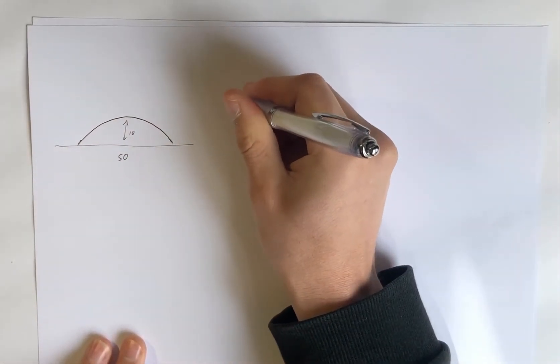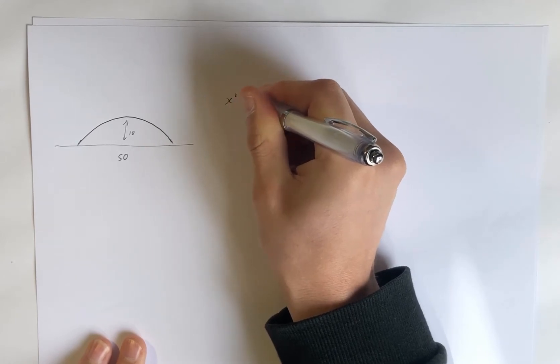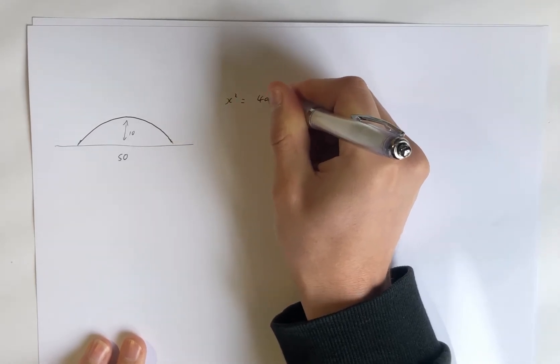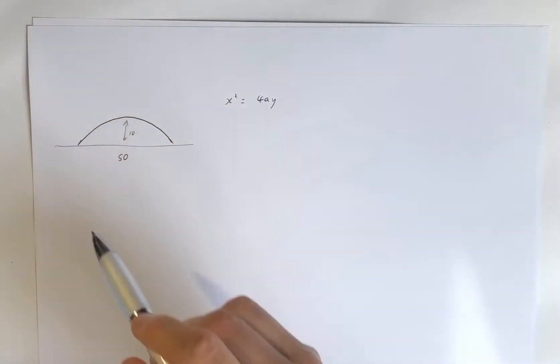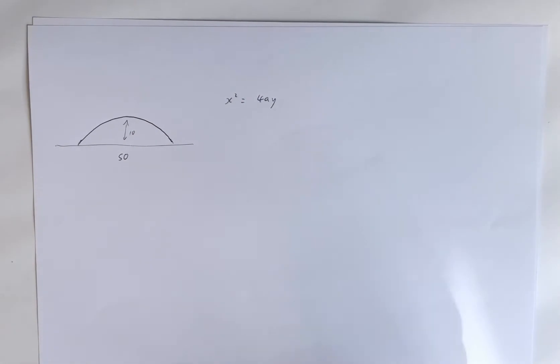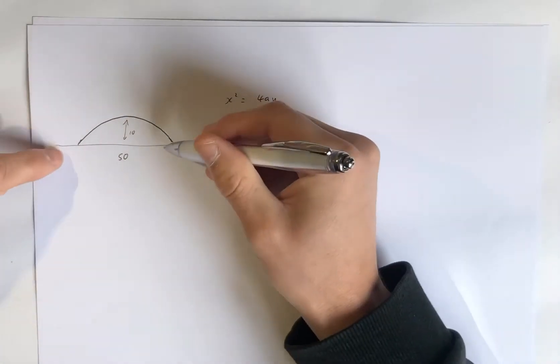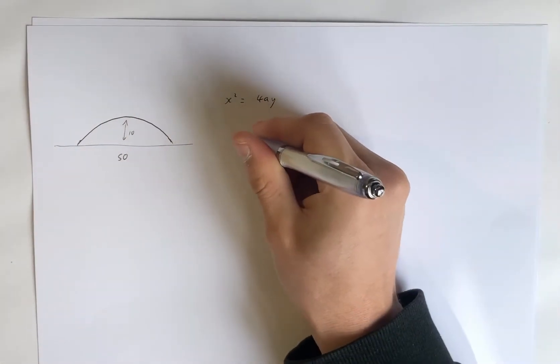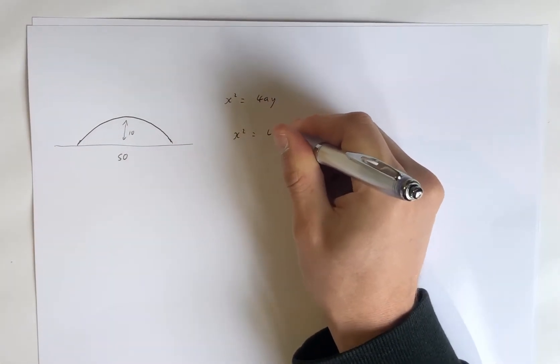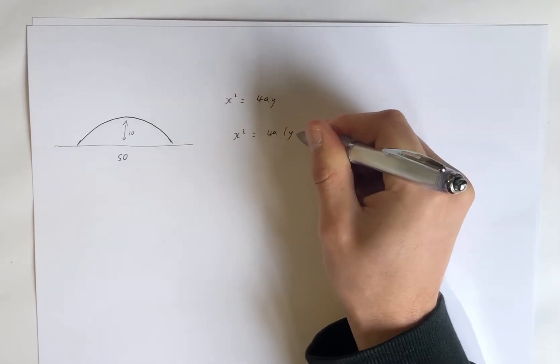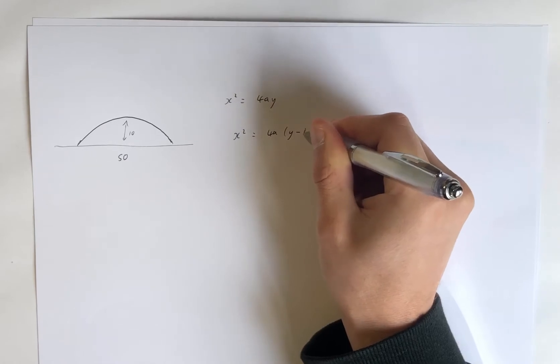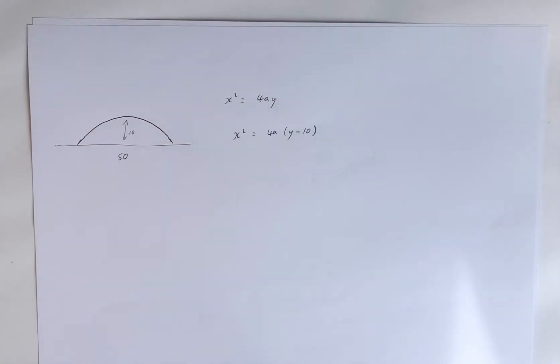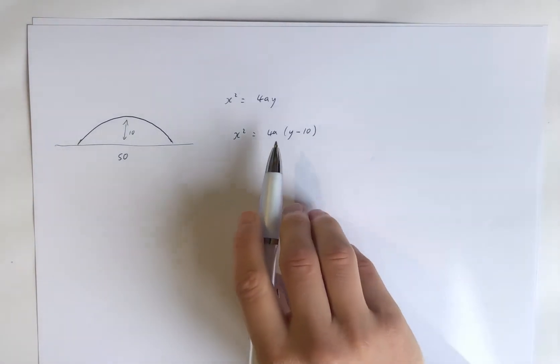So if this was a parabola, it's in the form of X squared equals 4AY. It's in that form because it's going this way. I know it's a negative, but that A is just going to come out to be negative for us anyway. So I'll just keep it positive for now. And it's been moved up 10, hasn't it? So it's X squared equals 4A(Y minus 10).